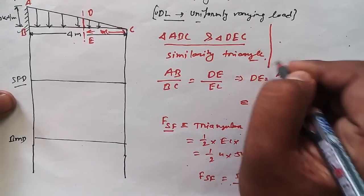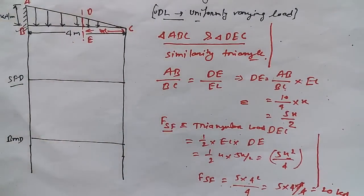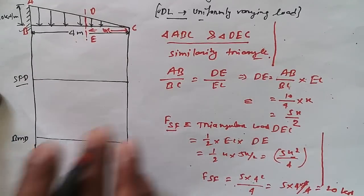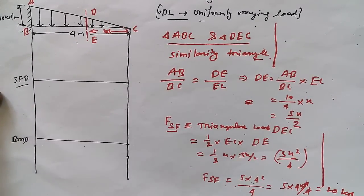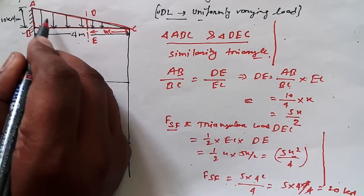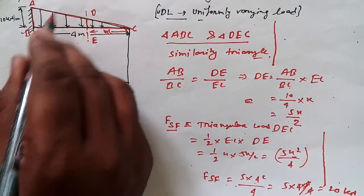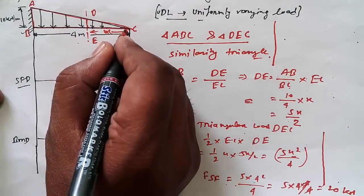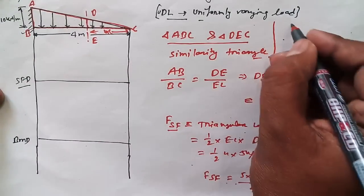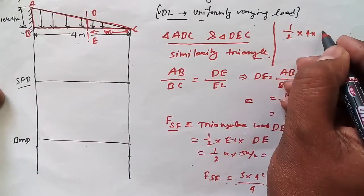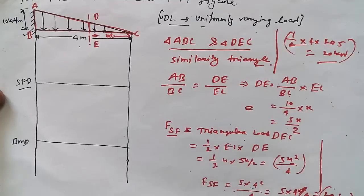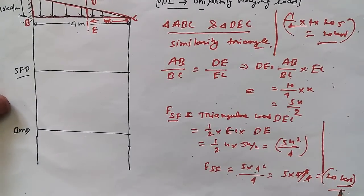This is one method I have shared. Let me also tell you the simple way, especially if you are preparing for a competitive examination. You just have to calculate the total triangular area to get the total shear force acting on this beam. Using the area of triangle formula: half × base × height = half × 4 × 10 = 20 kilonewtons. We get the same 20 kilonewtons — that is the shortcut method.